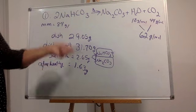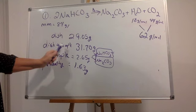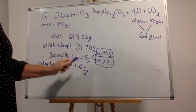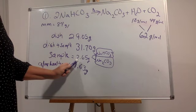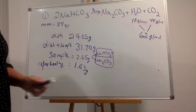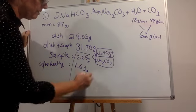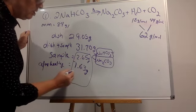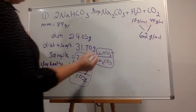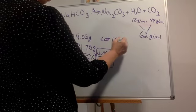So I'm going to give you a sample. Let's say I have a dish that weighs 29.05 grams. The dish plus the sample was 31.70 grams. The sample by itself is 2.65 grams. After heating it was 1.63 grams. So how much did I lose? I look at these two numbers and subtract — it looks like I lost 1.02 grams.